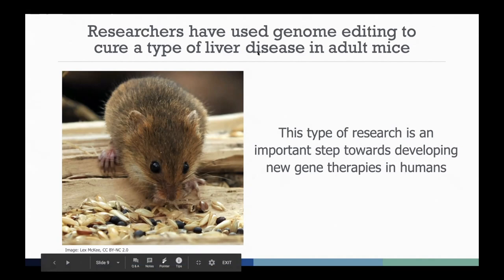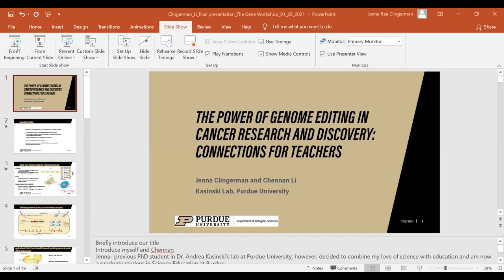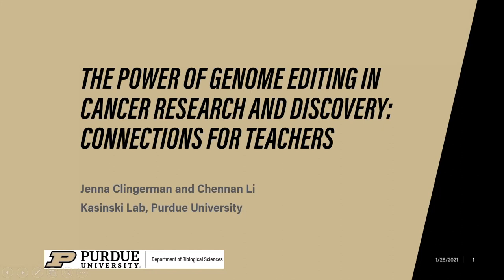Now that we have a baseline for what CRISPR is, how it works, and what it can be used for, I want to introduce our main speakers for tonight: Jenna Klingerman and Chenin Li. Both are researchers from the Kaczynski Cancer Lab at Purdue University, where they have engaged in research focused on applying CRISPR to lung cancer models. Thanks for being here. Thank you for having us. I'm Jenna Klingerman, and we're really excited to talk to you more about applications of the CRISPR-Cas9 system, specifically in cancer research.